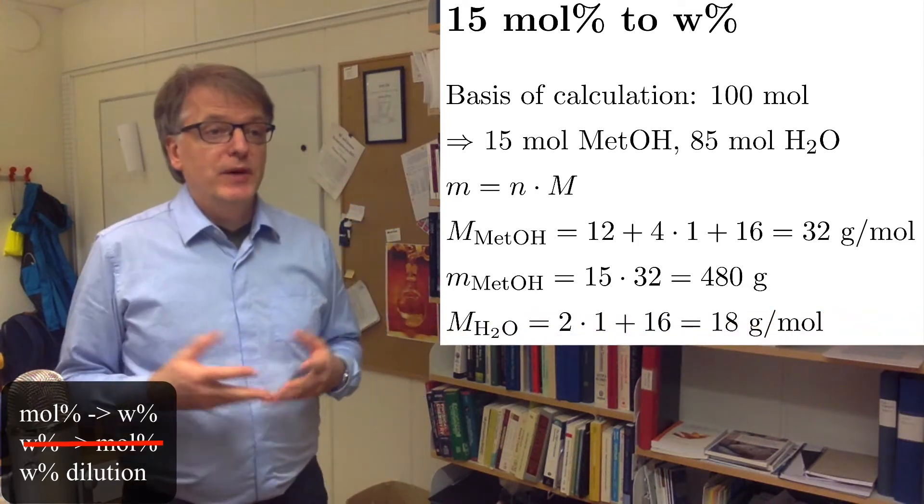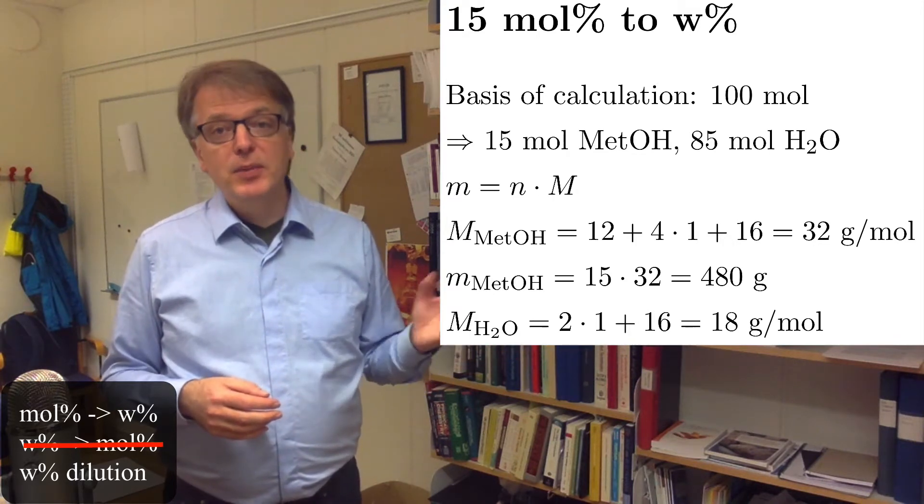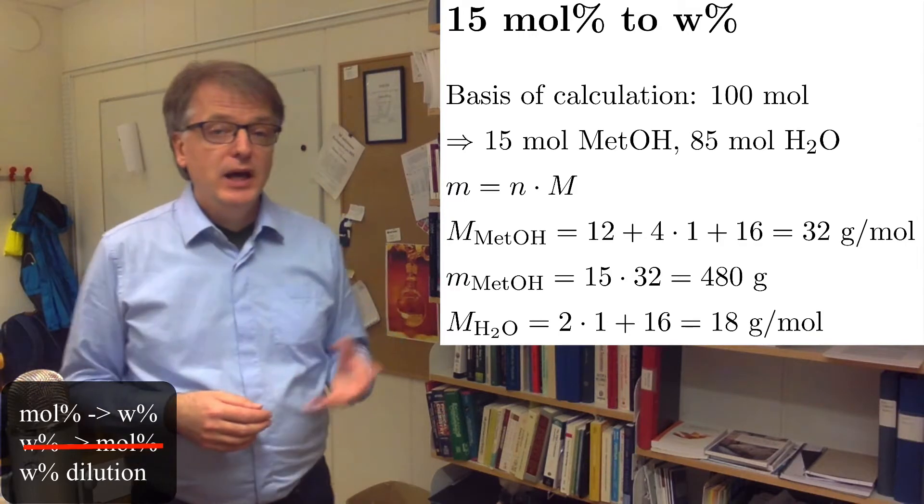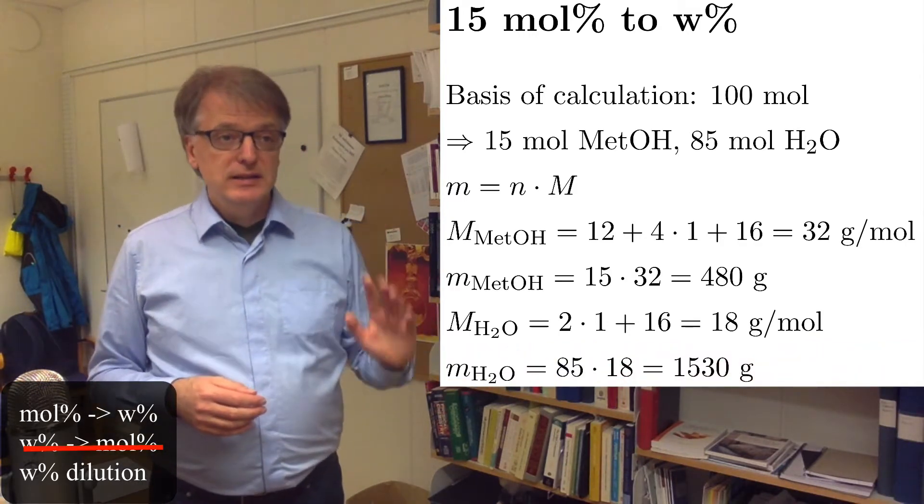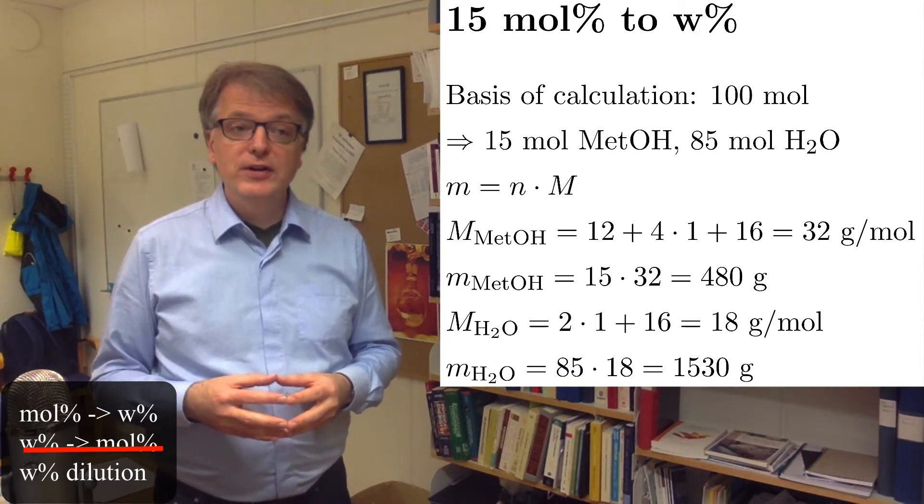For water, we have the molar weight: 2 hydrogens, 2 times 1, plus oxygen, that's 16. So, we get 18 grams per mole. The mass then is 85 moles times 18 grams per mole, and we get 1530 grams.